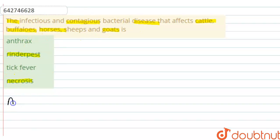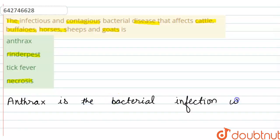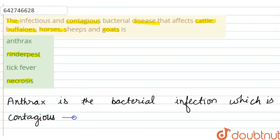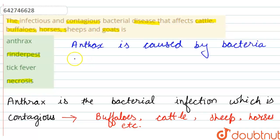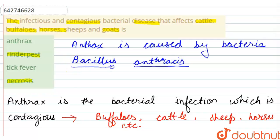Anthrax is the bacterial infection which is contagious and it affects cattle, sheep, buffaloes, horses, goats, etc. Anthrax is caused by a bacteria whose scientific name is Bacillus anthracis — we will underline it.